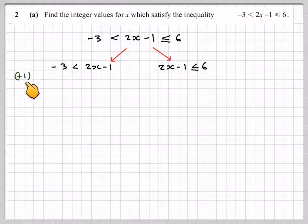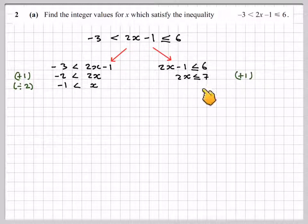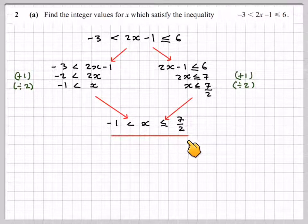Opposite of taking away 1 is to add 1 to both sides, so that becomes -2 < 2x. Divide by 2, you're going to get that -1 must be less than x. So going over here doing exactly the same thing, adding 1, you're going to get 2x ≤ 7. And then dividing by 2, you're going to get that x ≤ 7/2. Then what you need to do is rejoin them. So you've got -1 < x ≤ 7/2.